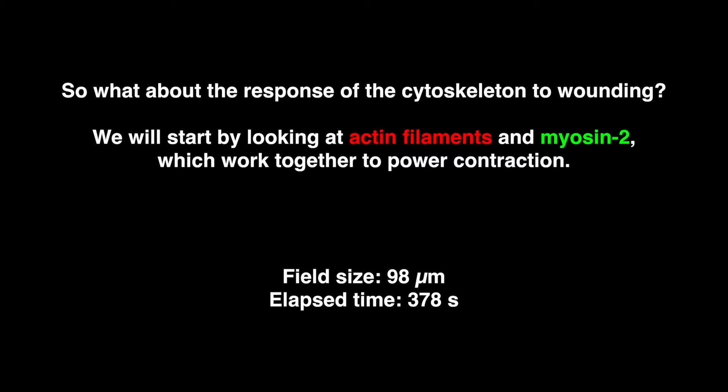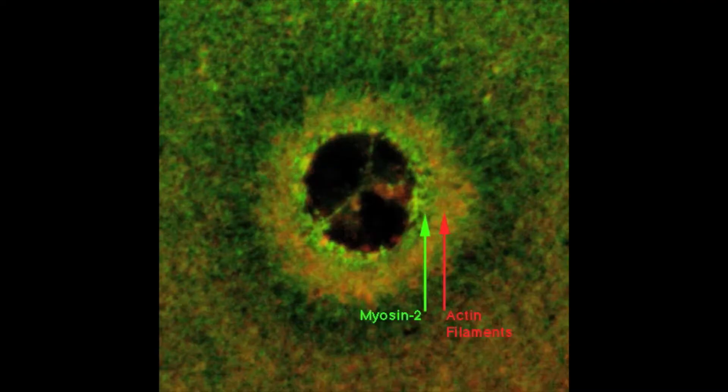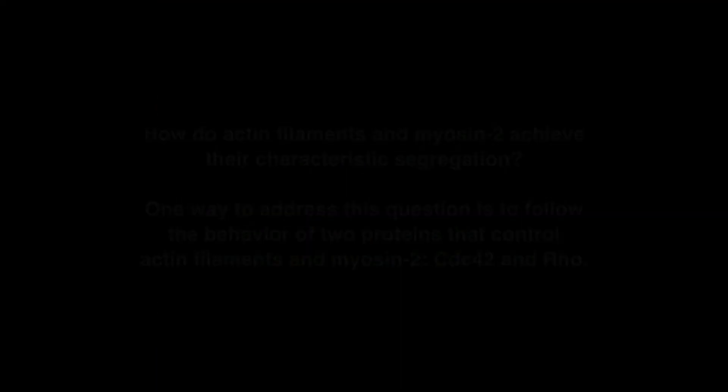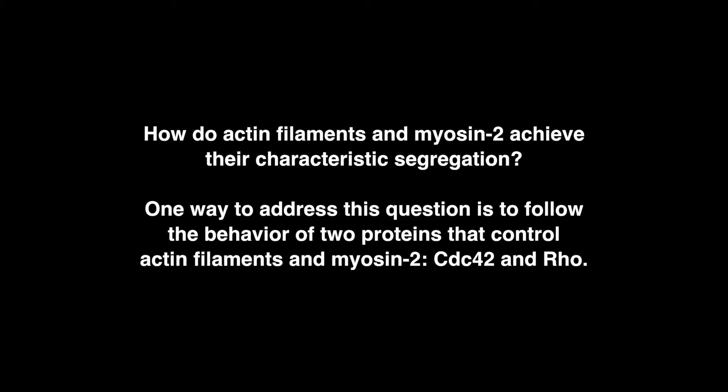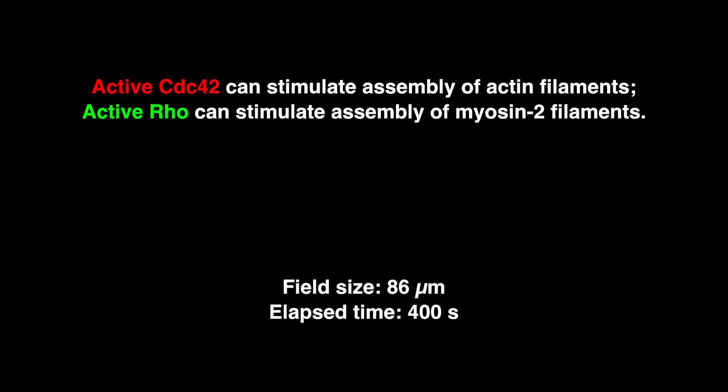So what about the response of the cytoskeleton to wounding? We will start by looking at actin filaments and myosin 2, which work together to power contraction. The actin filaments and myosin 2 are not quite right on top of each other; rather, it looks as if the myosin 2 concentrates inside the actin filaments. How do actin filaments and myosin 2 achieve their characteristic segregation? One way to address this question is to follow the behavior of two proteins that control actin filaments and myosin 2: Cdc42 and Rho. Active Cdc42 can stimulate assembly of actin filaments; active Rho can stimulate assembly of myosin 2 filaments.